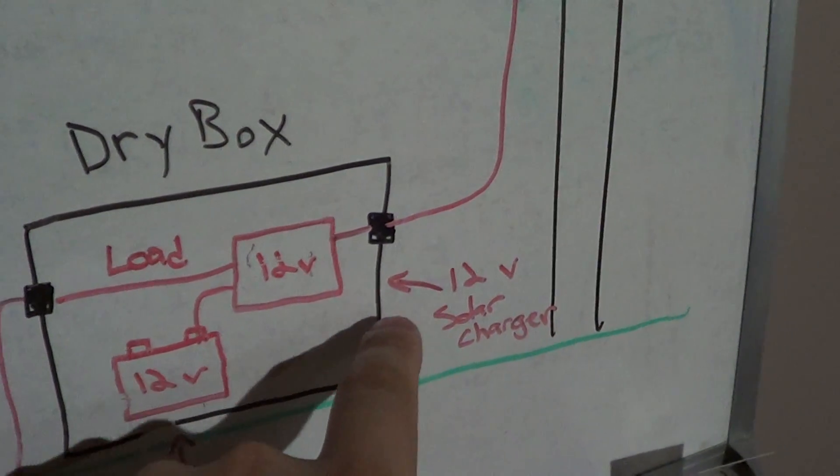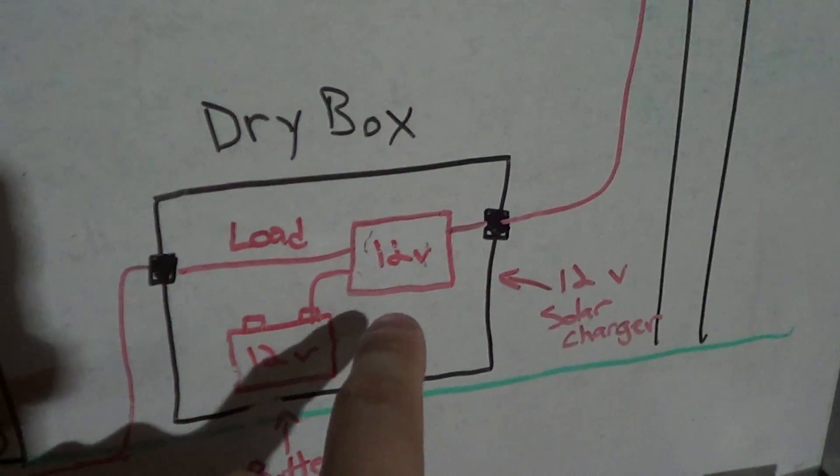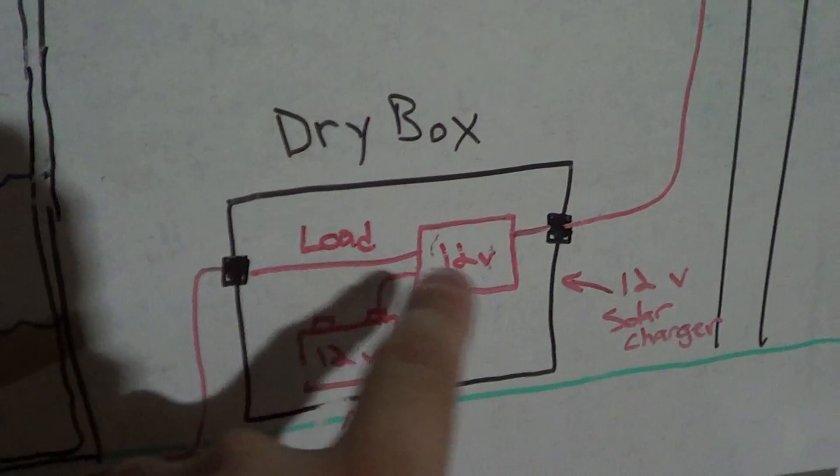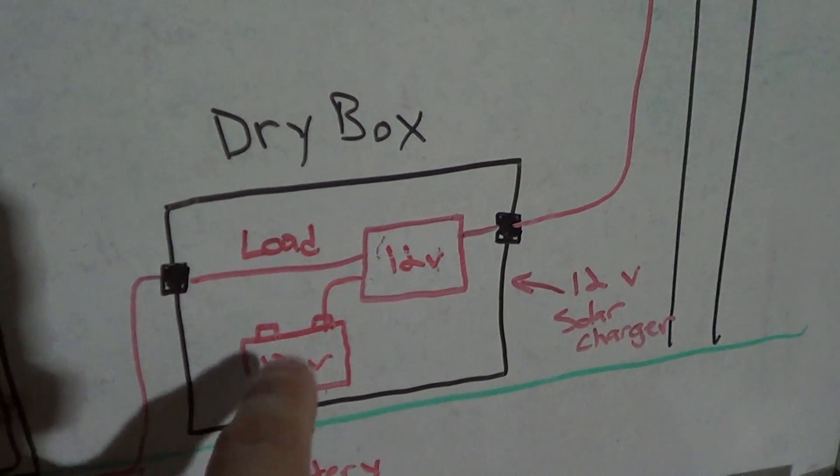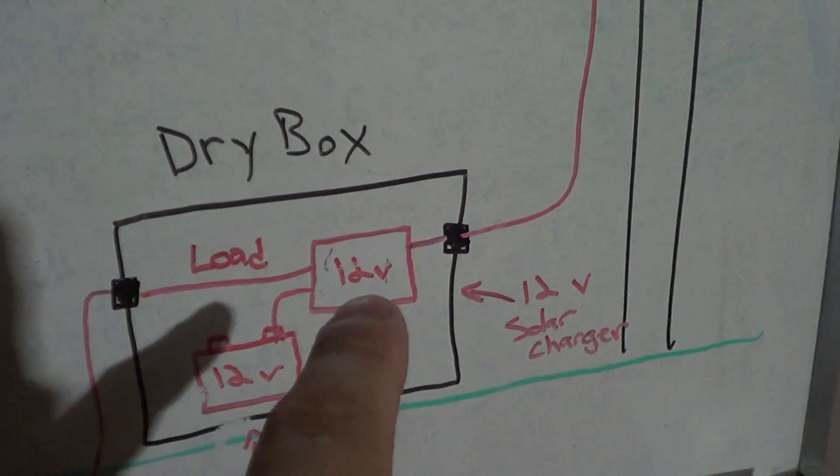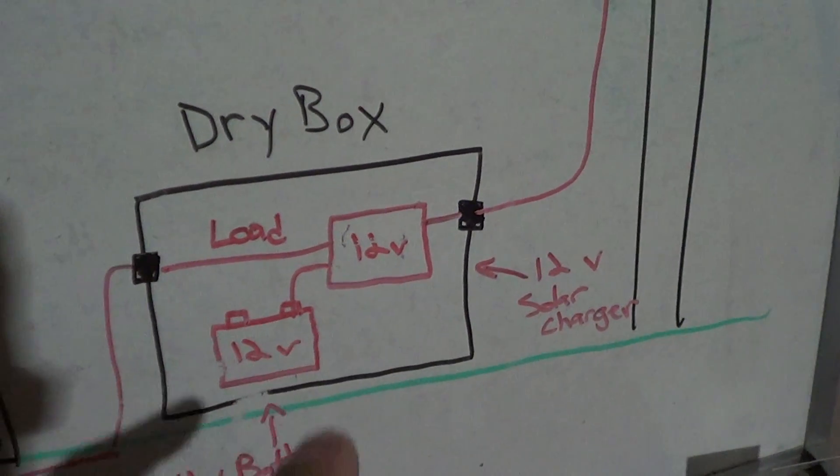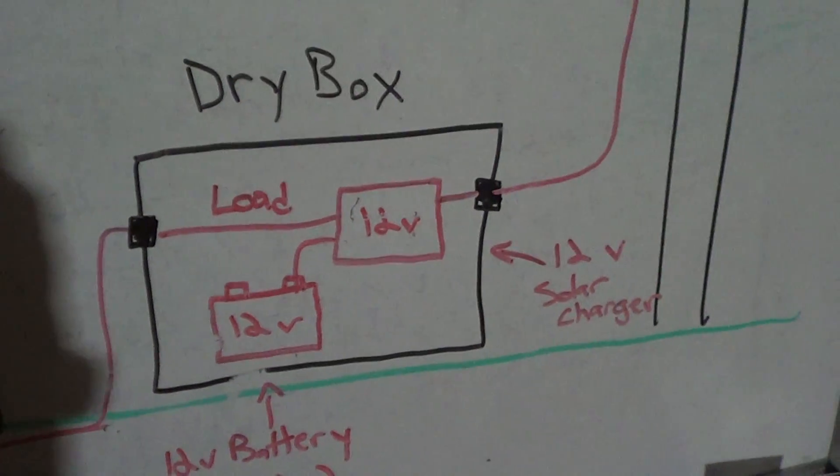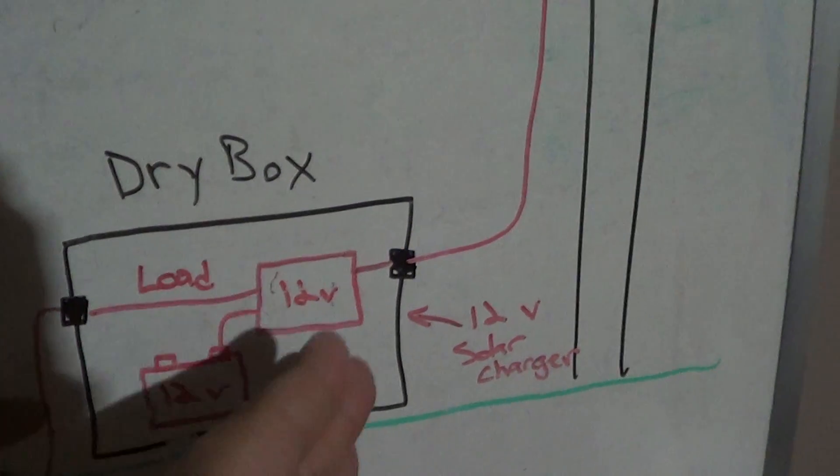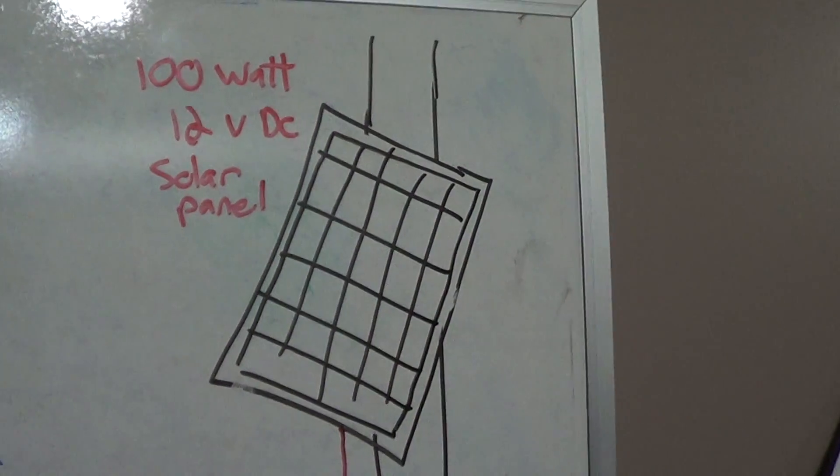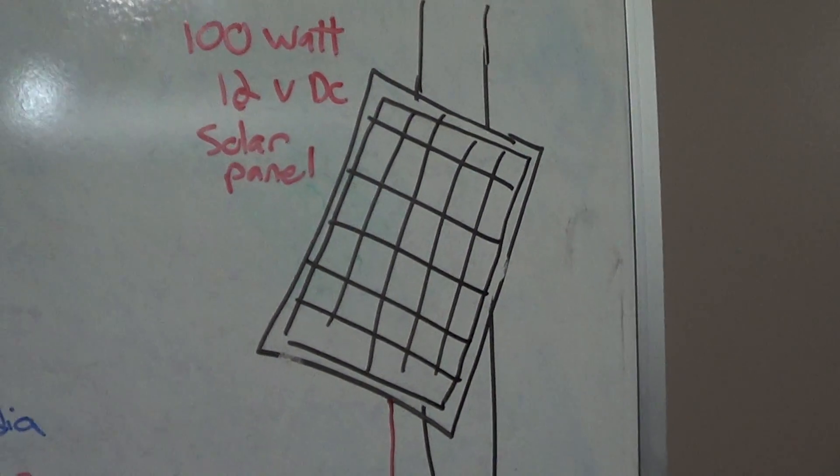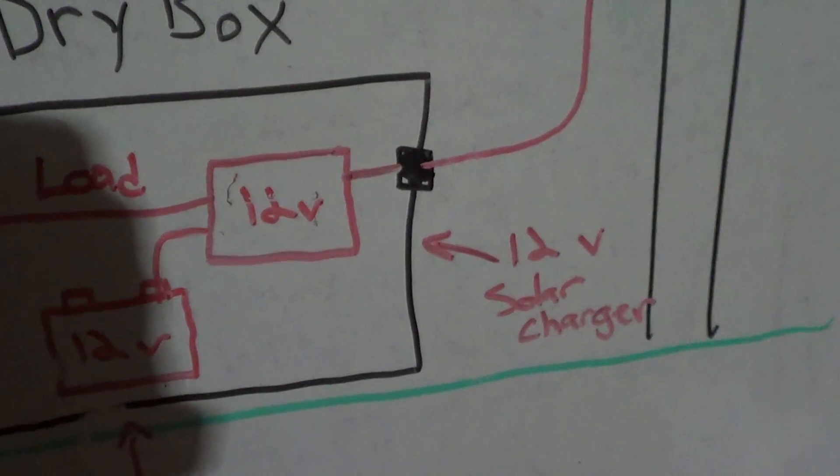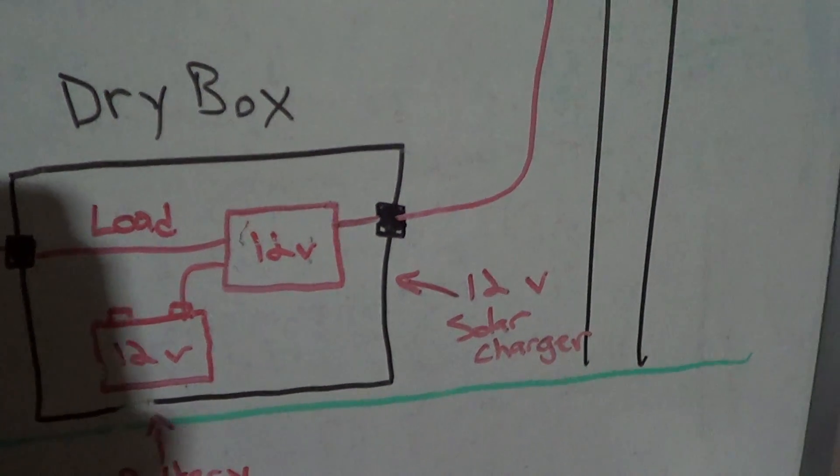The reason this solar charger is important is because it's basically splitting the load. It's first powering your device and then it's dumping the rest of the power into the battery. When one of those things is full it's going to basically shut off. So it won't overcharge the battery. It'll just shut off the connection here and the solar panel won't be generating any electricity at that point. So just a little safety switch basically here is the 12 volt solar charger.